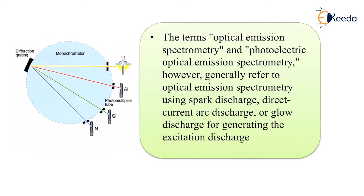In summary, we studied emission spectrometry — the entire principle — including optical emission spectrometry, the photoelectric effect, and how the entire process takes place. It is important to understand the different detectors as well; here the example was the photomultiplier tube, and we saw how it is important and how it helps us in detecting metals.